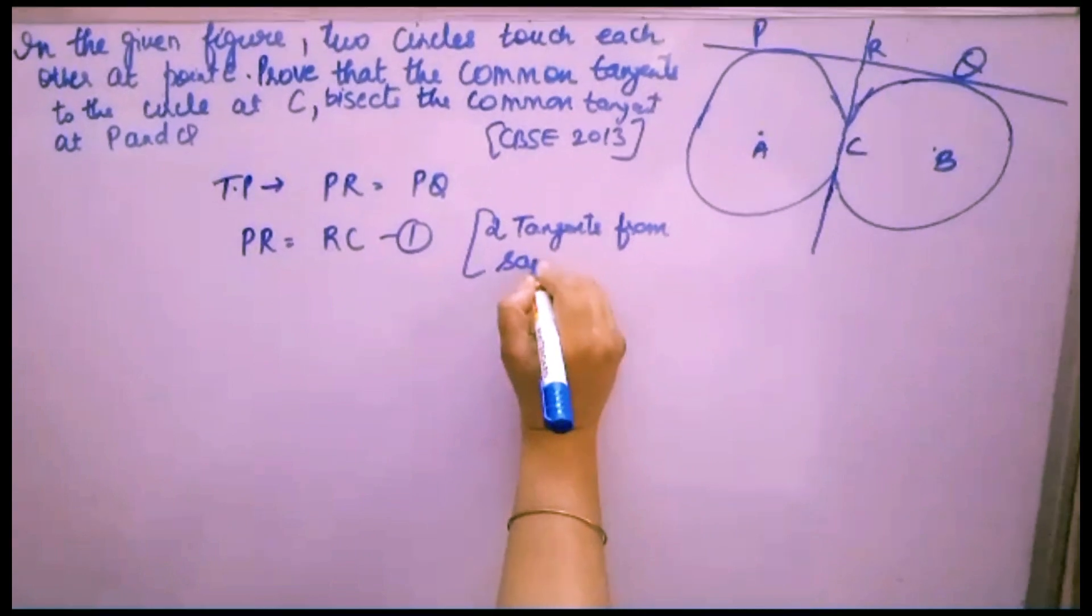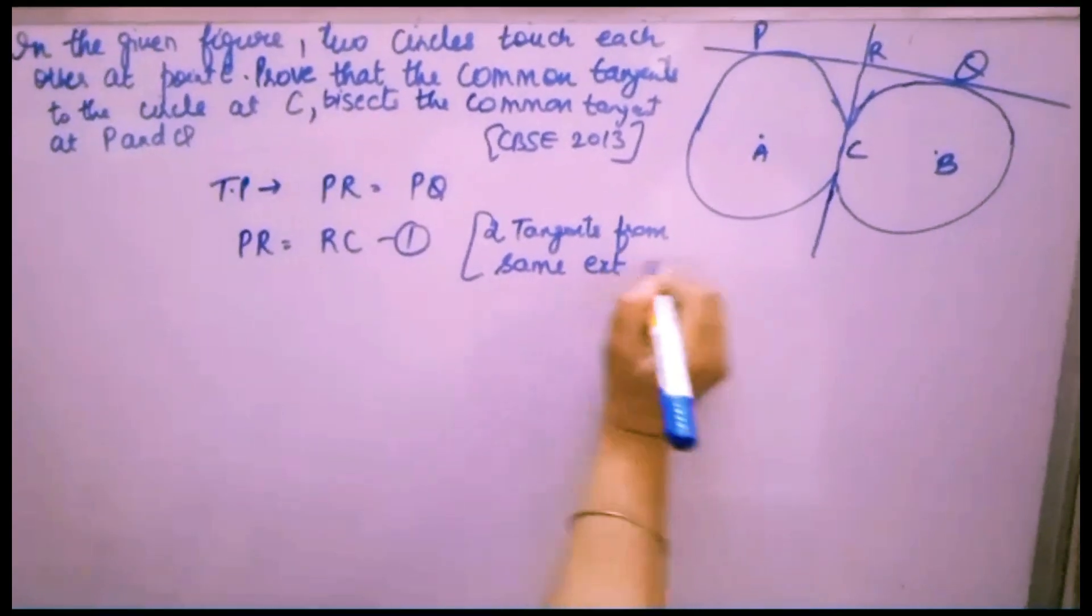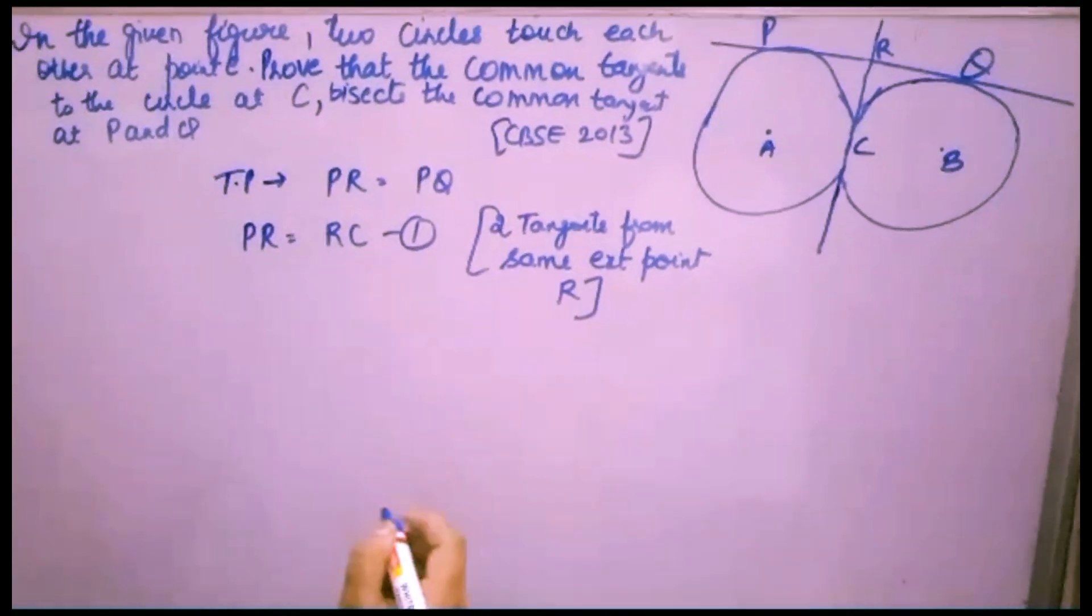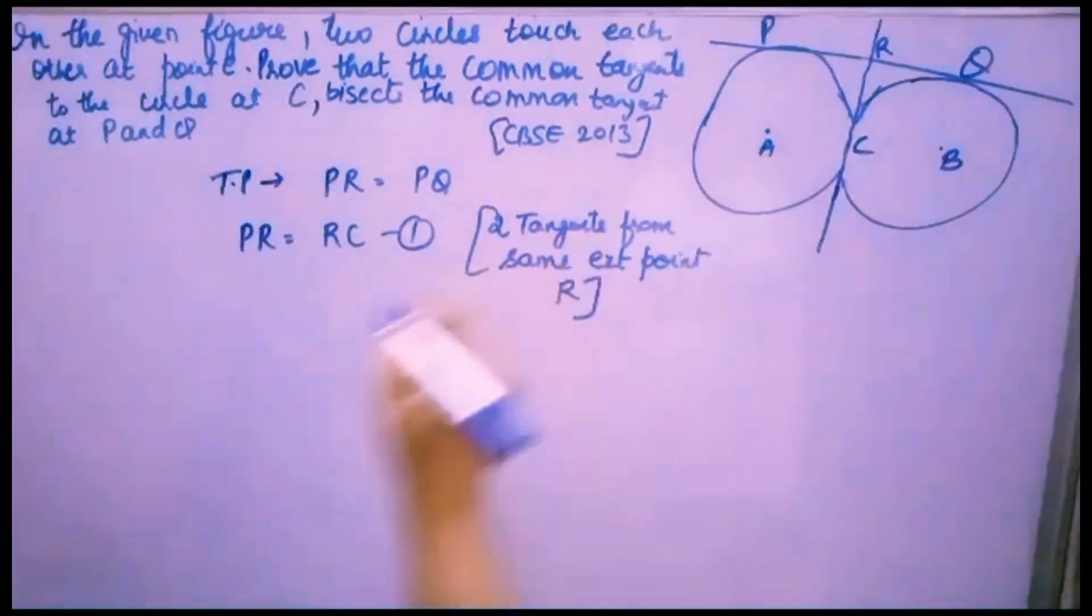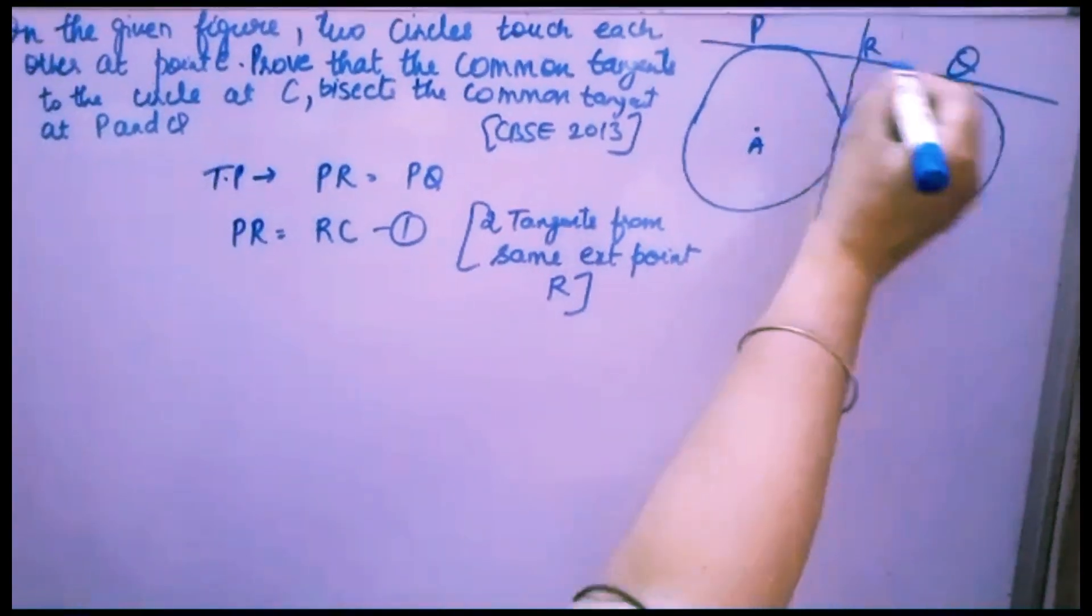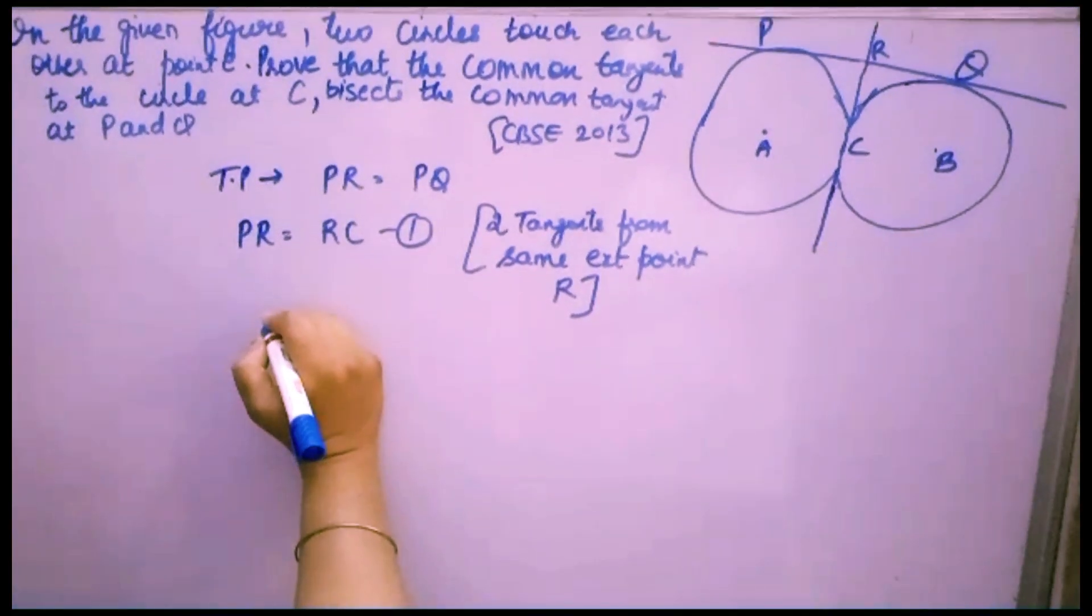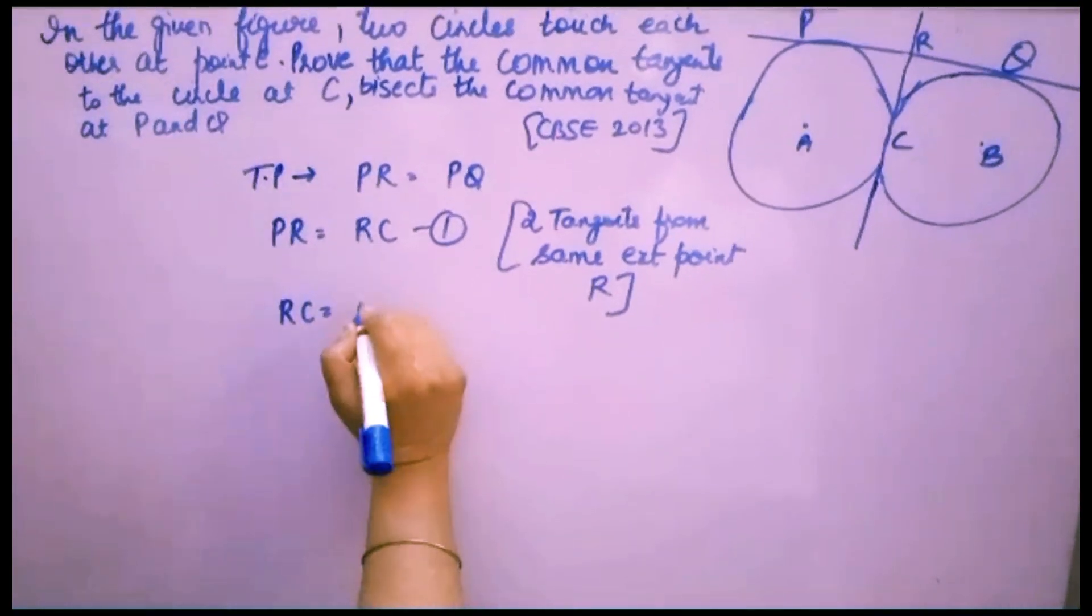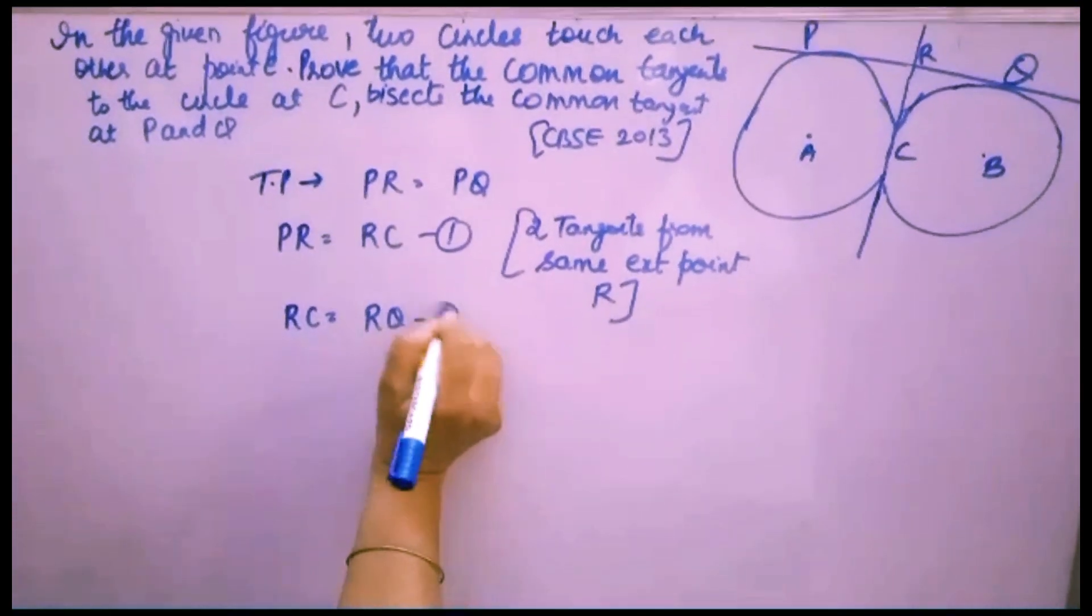This is the first equation. Now for this second circle, you see RC and RQ are two tangents from the same exterior point R, so RC will be equal to RQ. This is the second equation, same reason: two tangents from the same exterior point R.